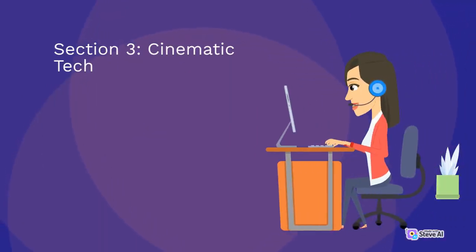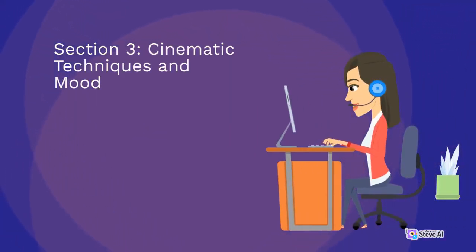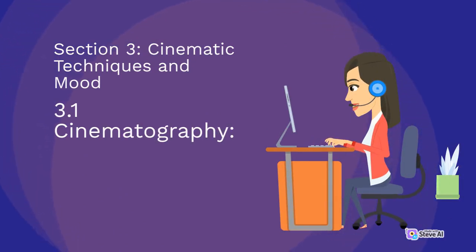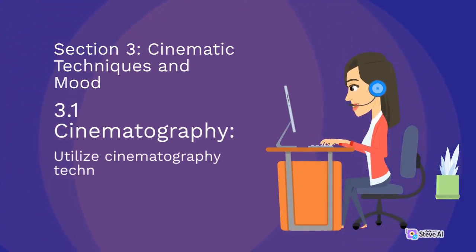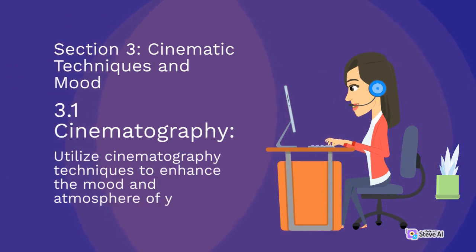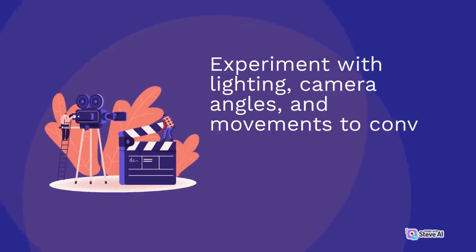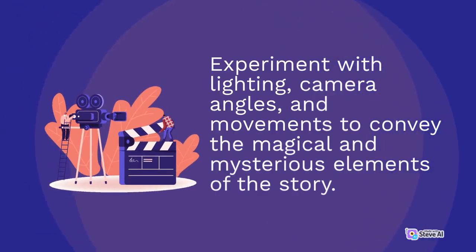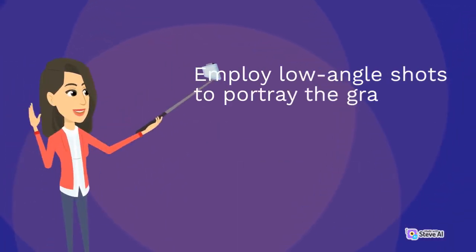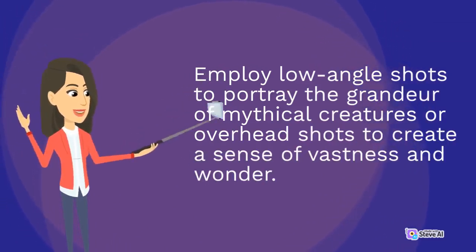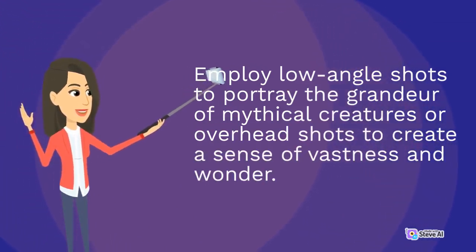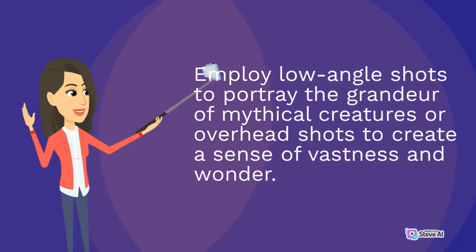Section 3: Cinematic Techniques and Mood. 3.1 Cinematography. Utilize cinematography techniques to enhance the mood and atmosphere of your film. Experiment with lighting, camera angles, and movements to convey the magical and mysterious elements of the story. Employ low-angle shots to portray the grandeur of mythical creatures, or overhead shots to create a sense of vastness and wonder.